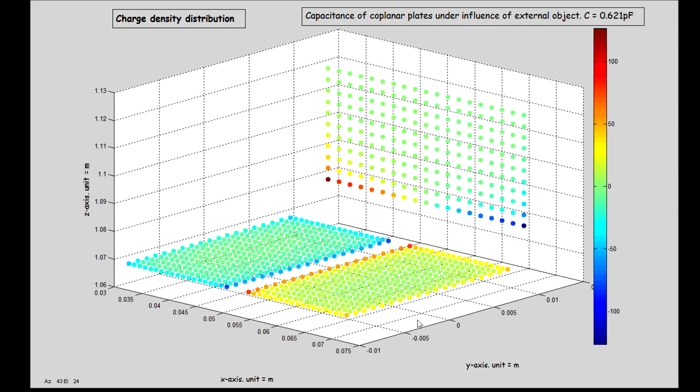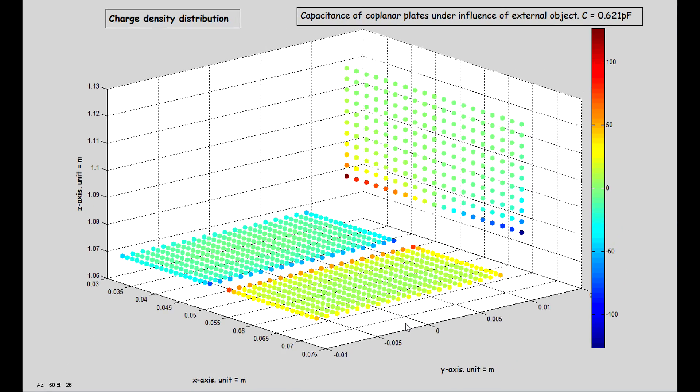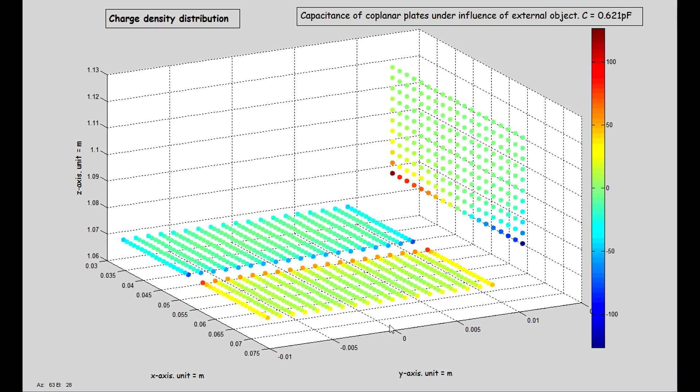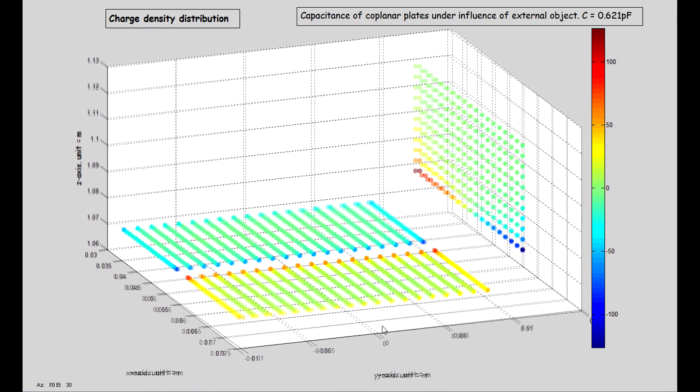Two plates are required to detect a nearby object. This dismisses the idea that CapSense uses one plate to detect the object's capacitance with respect to infinity.